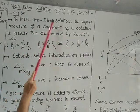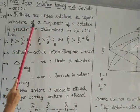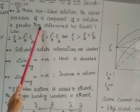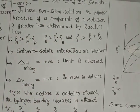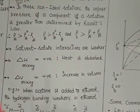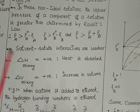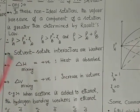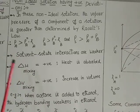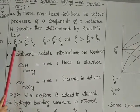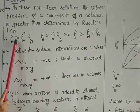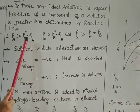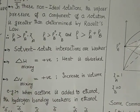First point: in these non-ideal solutions, the vapor pressure of a component of the solution is greater than that determined by using Raoult's law. The vapor pressure of the solvent in the solution will be greater than the vapor pressure determined by Raoult's law, that is, greater than the product of P-naught-A into X-A.